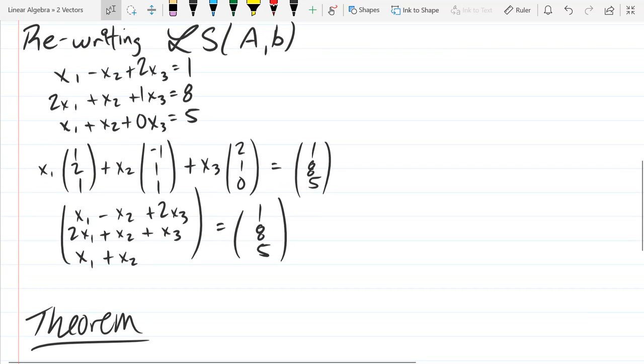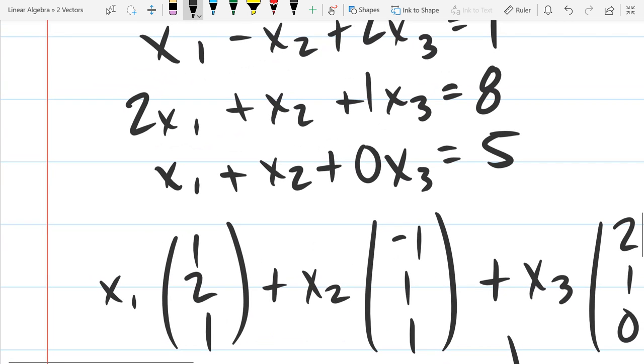The theorem just summarizes what this rewriting really means. I showed you we could write a linear system as a linear combination of vectors. The correct vectors in the correct dimension, or the vectors represent the, for example, the first vector represents the first coordinate's coefficients.